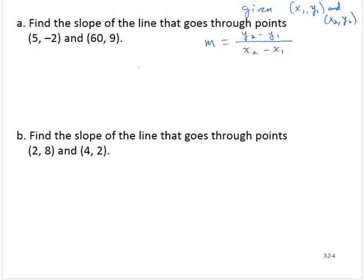So I'm given these two ordered pairs. I can think of the 5 as the x-coordinate of the first point. The negative 2 is the y-coordinate of the first point. 60 is the x-coordinate of the second point, and 9 is the y-coordinate of the second point.